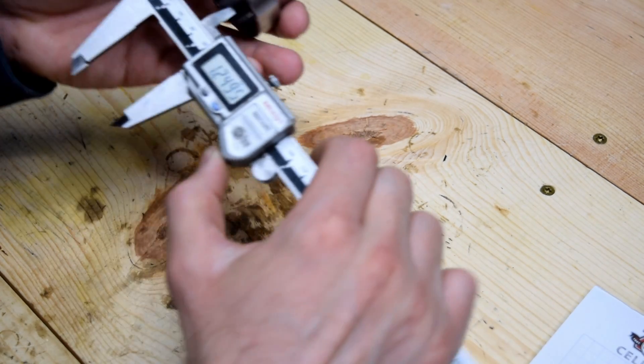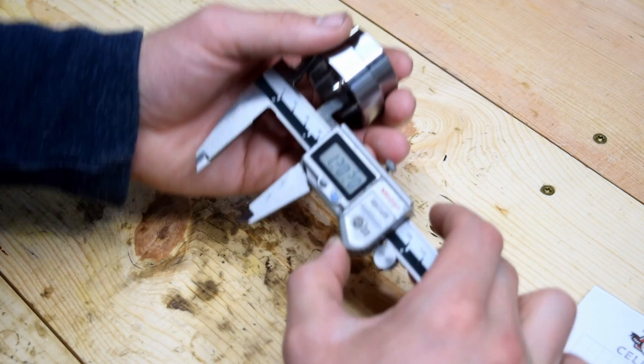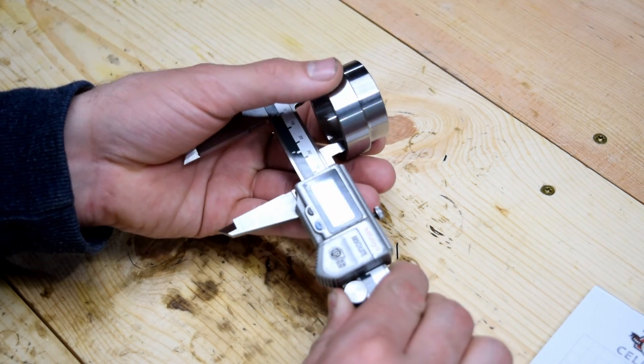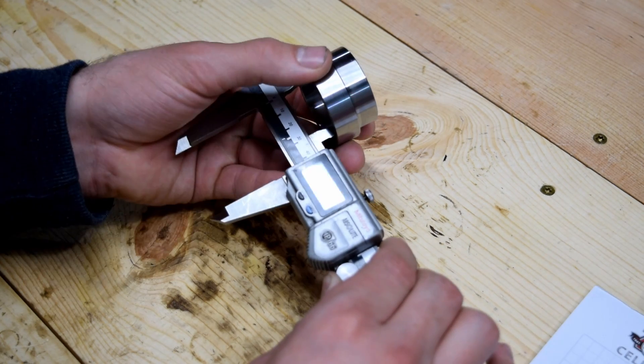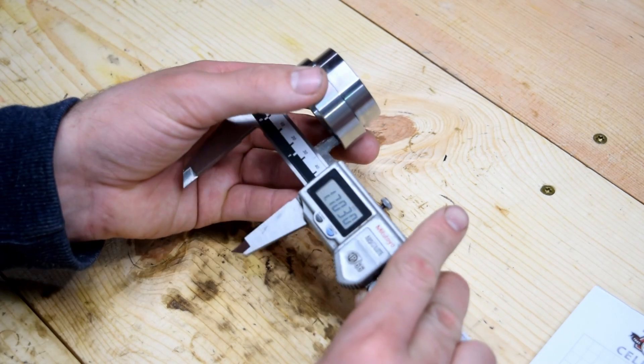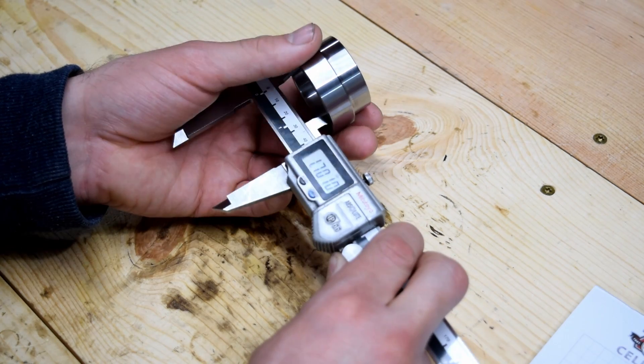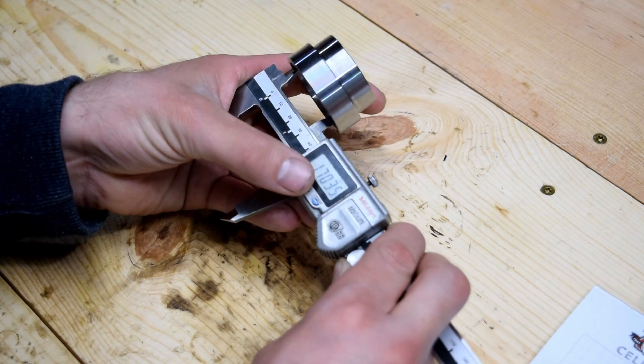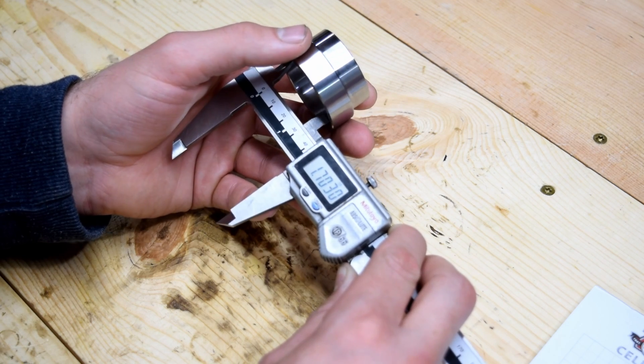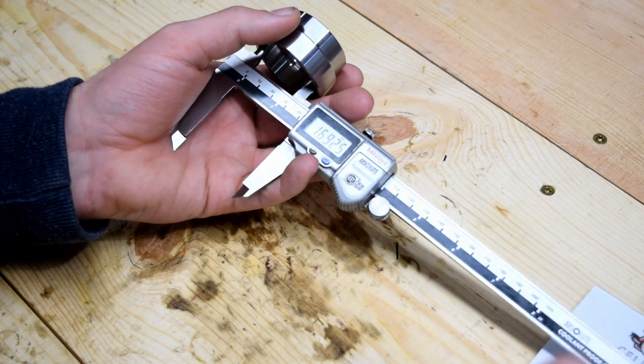Now this inside diameter here. Look at that, just a hair over 1 inch 700. 703. 703, we'll keep it.